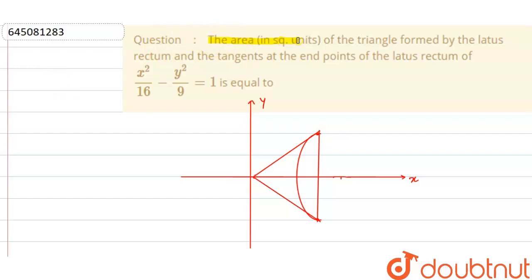Our question is: the area in square units of the triangle formed by the latus rectum and tangents at the end points of the latus rectum of x²/16 − y²/9 = 1 is equal to?